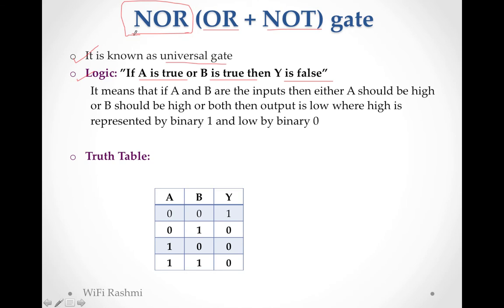NOR means opposite of OR. In OR we attached a NOT gate, so it works in opposite. If we pass 0 it becomes 1. So whatever statement or logic OR had, it becomes opposite. In OR the logic was if any input is true then Y is true. In NOR, just opposite: if A is true or B is true, Y will be false - just opposite of OR gate.